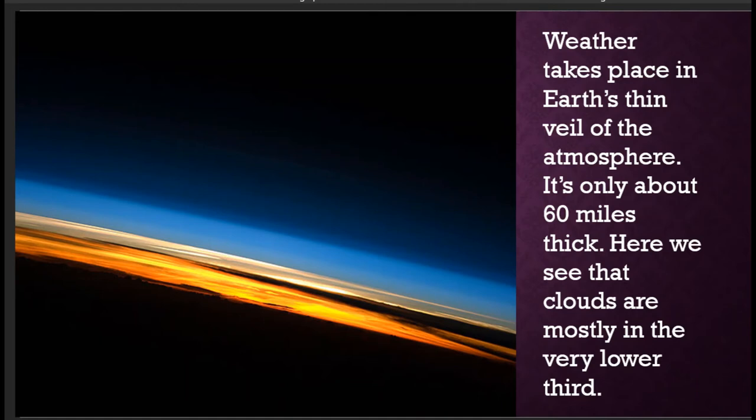So weather takes place in the atmosphere, and the atmosphere is one of the thinnest layers of all the Earth's systems we have here. In fact, it's so thin we could actually see through it. It's divided into a number of different layers. What we see is most weather takes place in what we call the troposphere, which is the lowest third of our three major atmospheric layers that we see here.